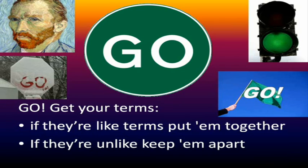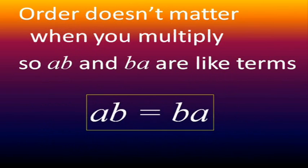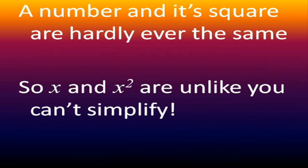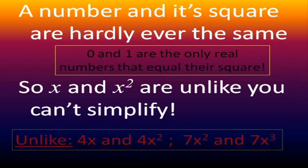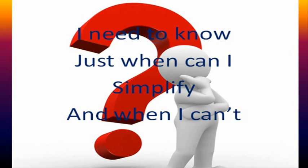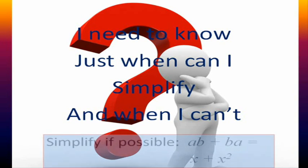If they're unlike, keep 'em apart. Order doesn't matter when you multiply, so a,b and b,a are like terms. A number and its square are hardly ever the same — so x and x squared are unlike. You can simplify, but I need to know just when can I simplify.